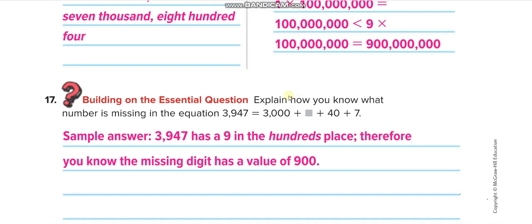Explain how you know what number is missing in the equation. The first digit is 3, its place value is 1,000, so 3,000. Then 9, its place value is 100, so 900 — that is the missing value. Then 4, its place value is 10, so 40. And 7 ones.